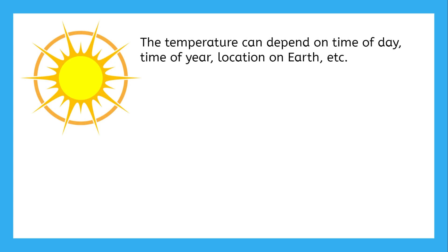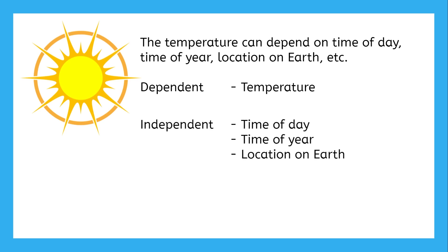Take, for example, measurements in temperature. When measuring temperature, the temperature can depend on what time of day it is, what time of year it is, where on earth you're measuring from, or many other factors. So temperature is the dependent variable, while all the factors that it depends on are independent. They aren't changed by anything else unless we intentionally wait until a later time or move to a different place.